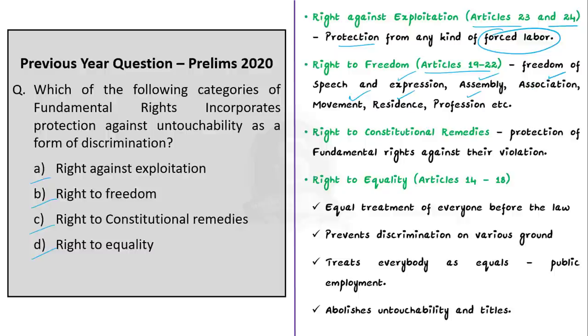The right to constitutional remedies provides for legal remedies for the protection of fundamental rights against their violation by the state or any other institutions or individuals. This is also an incorrect option as it does not deal with untouchability.